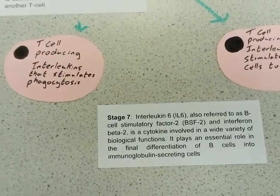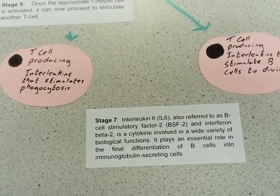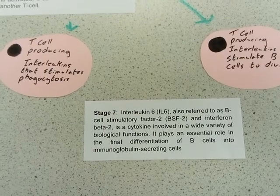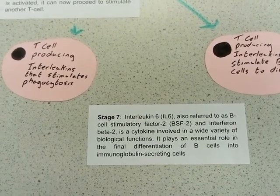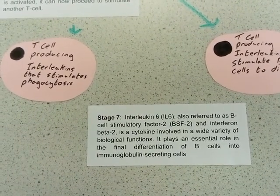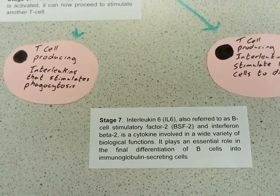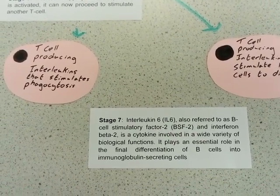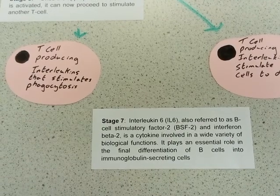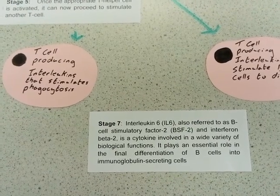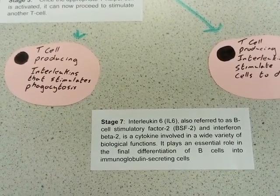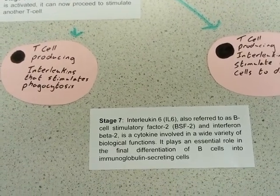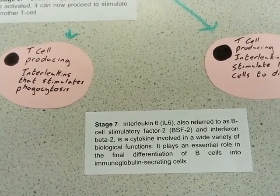There are two types of T-cells that produce interleukins. Interleukin-6, also referred to as the B-cell stimulatory factor, and interferon beta-2, which is a cytokine involved in a wide variety of biological functions. They each play an essential role in the production of B-cells, which will then go on and produce antibodies.